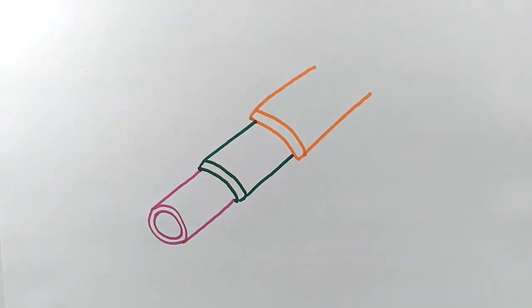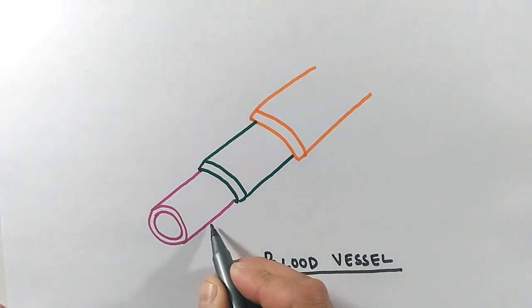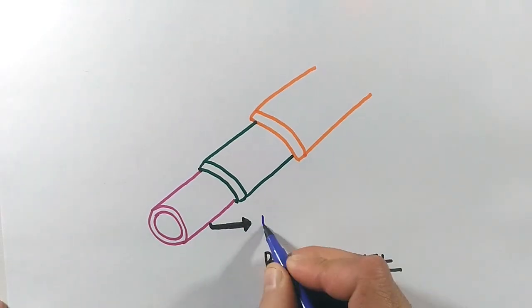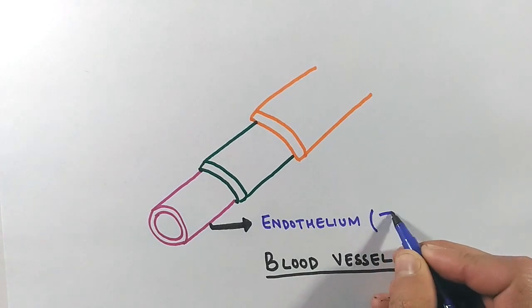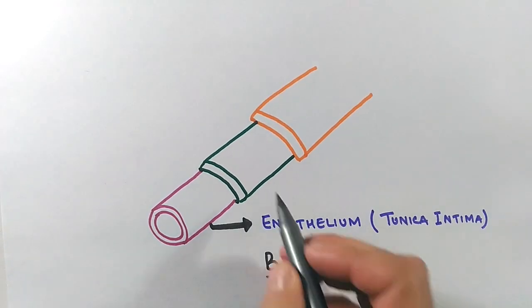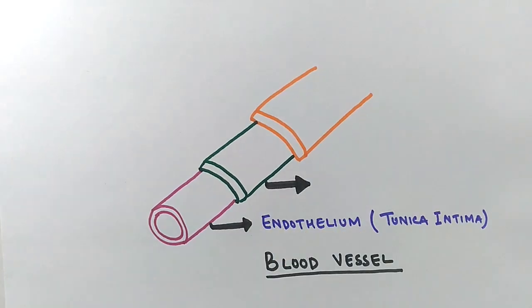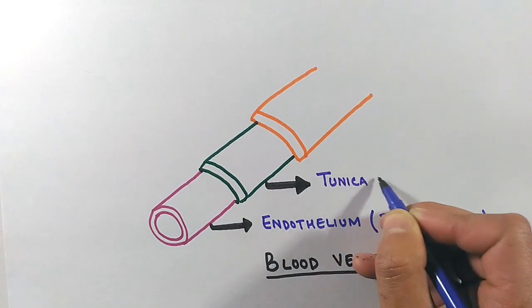In the structure of blood vessels, we see there are three types of cells arranged in three layers. The first layer, the innermost layer, is endothelium made up of endothelial cells, also called tunica intima. Then we have the middle layer called tunica media.